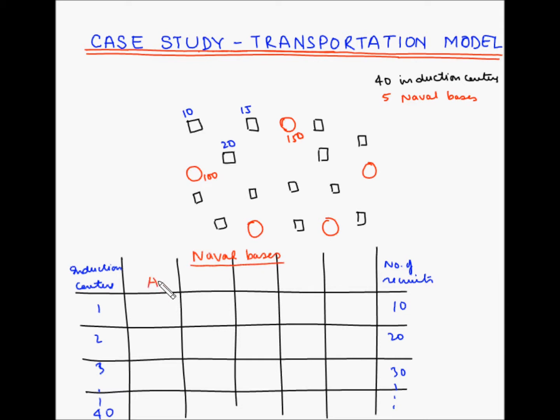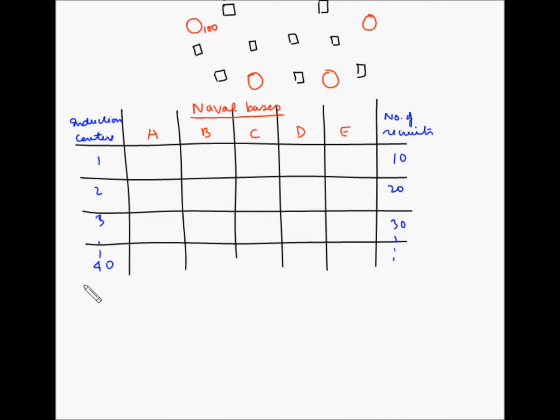We will have 5 naval bases A, B, C, D and E. At the bottom, we will have the capacity at these naval bases or the demand at the destination. I will put the capacity as the demand.